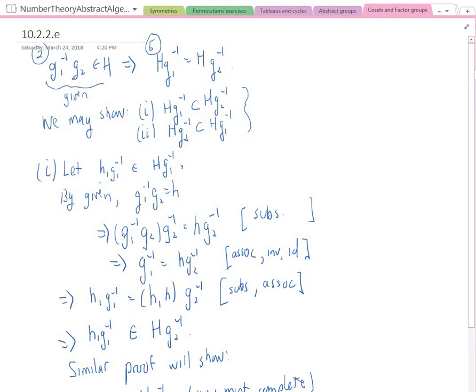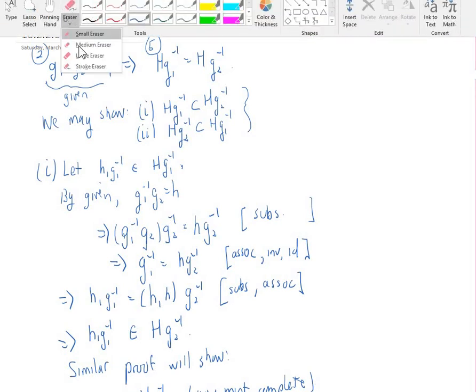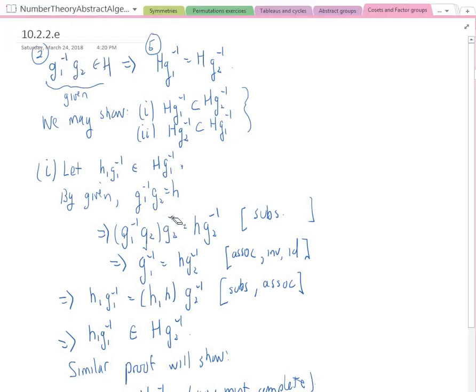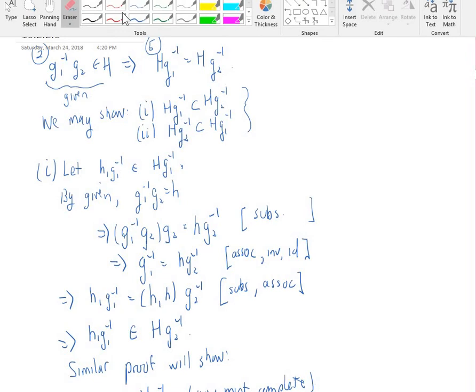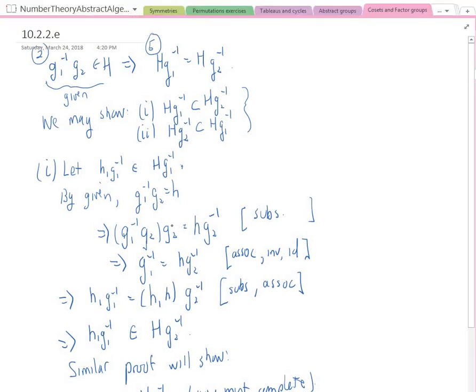Since we're given that G1 inverse G2 is an element of big H, I can set that element equal to little h. All right, so let's take this and basically multiply both sides by G2 inverse, which I can call substitution. Then if I use associative and inverse and identity property, this G2 and this G2 inverse cancel each other. That inverse is kind of messy. Let's make it a little bit nicer. That should be an inverse. So that inverse will cancel this G2, and I just get G1 inverse equals HG2 inverse.